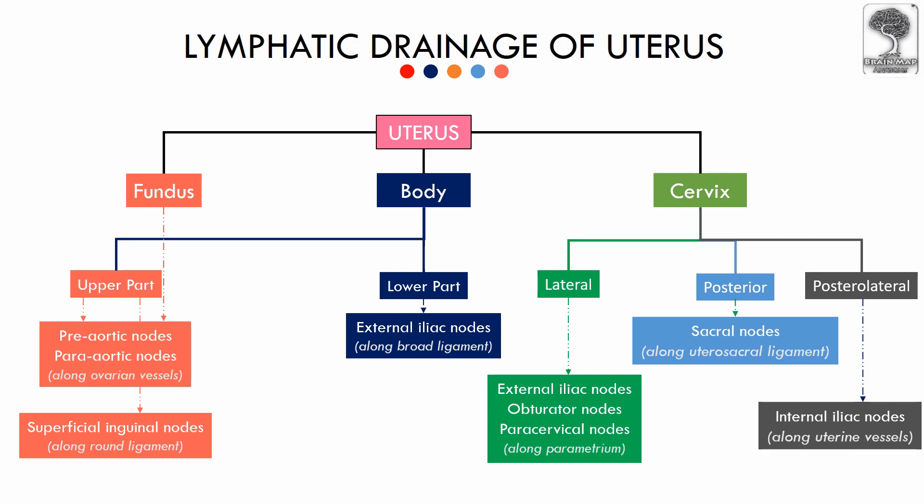This is the lymphatic drainage of the uterus and cervix in a nutshell. It is a clinically relevant topic as carcinoma of the uterus and cervix is a common condition, especially in developing countries. The lymphatic spread occurs through the lymph vessels, and a biopsy of the sentinel node is warranted for staging of the cancer. Thank you for watching — do subscribe to our channel for more videos.